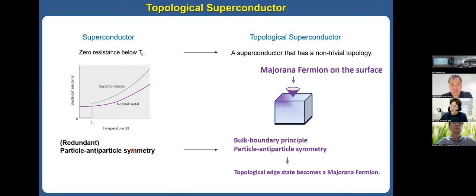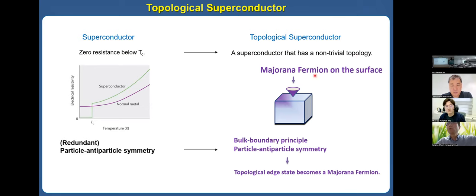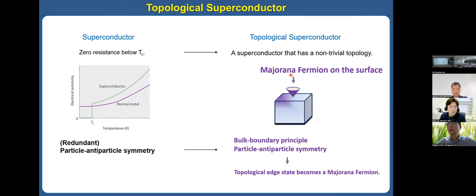The topological superconductor is a superconductor that has a non-trivial topology. Due to the bulk-boundary correspondence and particle-hole symmetry, there is an edge or surface state on the boundary of the material, which is known as the Majorana fermion.